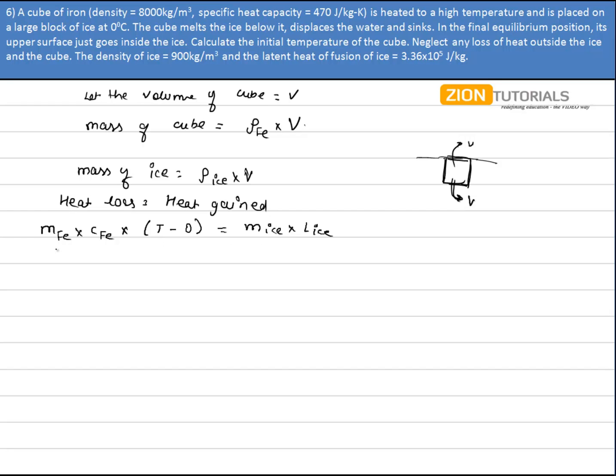So I do have M of Fe as rho Fe into V into specific heat of iron as 470 into T is equal to mass of ice is rho of ice into volume into latent heat of ice that is given to me as 3.36 into 10 to the power 5.